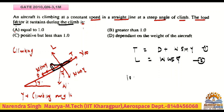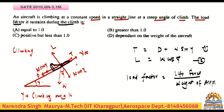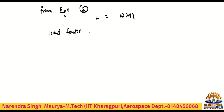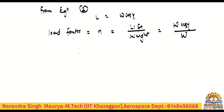What is the load factor? It is lift force divided by weight of the airplane. From equation 2, L equals W cos gamma. So the load factor n equals L divided by W, which is W cos gamma divided by W. Therefore the load factor equals cos gamma.